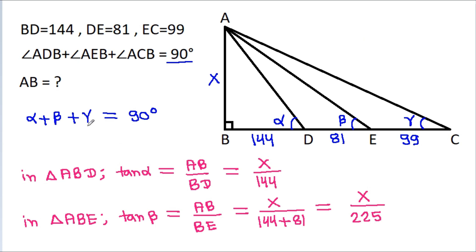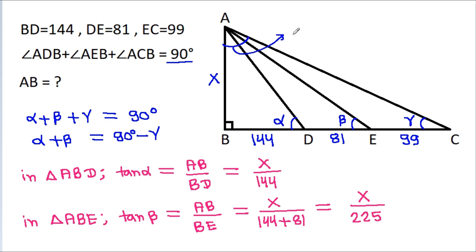From here, we get alpha plus beta equals 90 degrees minus gamma. And in triangle ABC, this angle is 90 degrees, this angle is gamma, so this angle will be 90 degrees minus gamma.